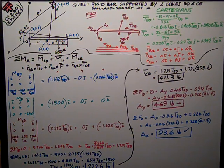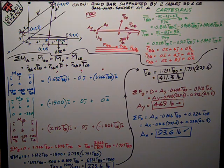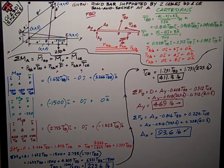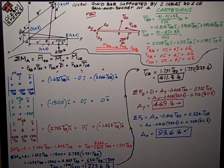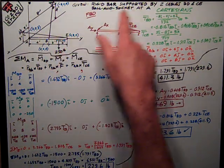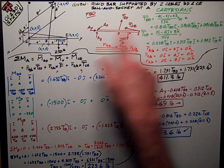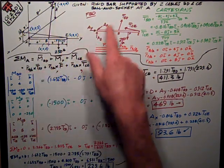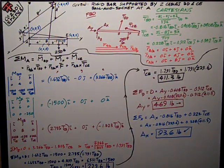This is David Spears, civil engineering instructor at Texas Tech University, talking about CE2301 statics. We've got a rigid body equilibrium problem in 3D, and we've got a rigid bar supported by two cables, BD and CE, and a ball and socket joint at A.